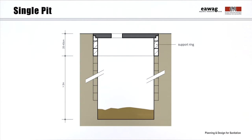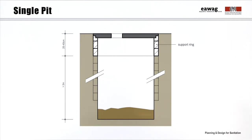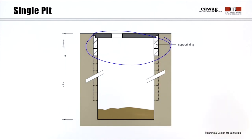The single pit is one of the most widely used sanitation technologies. It consists of a hole in the ground which is usually three or more meters deep. It normally has a lining to stabilize the walls of the pit. At least the top 20 to 40 cm should be lined with a support ring made of bricks or blocks. The user interface can then be placed on top of it.